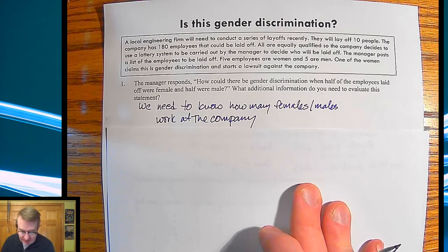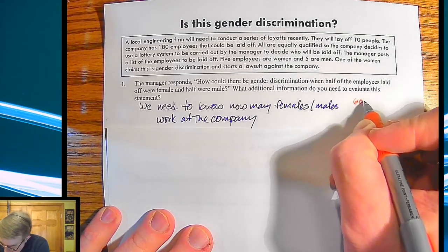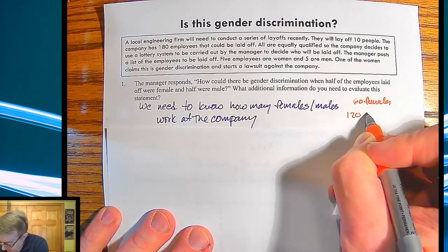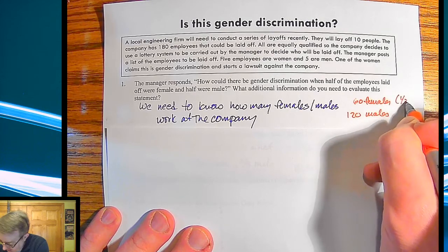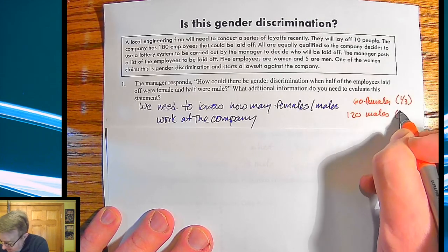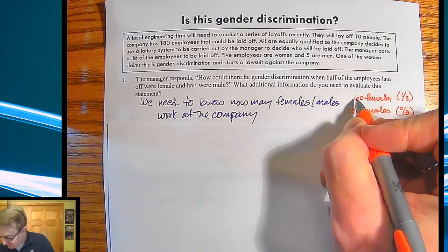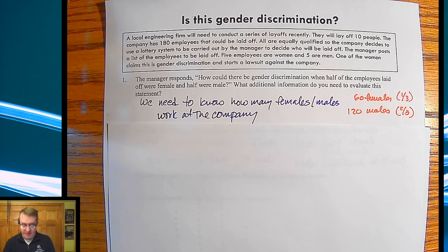We go through and we tell you this, there are 60 females and 120 males. So basically it's one third of the workforce is female. The other two thirds is male. How does that change your view? How do we prove that? Is this unlikely? Could this happen? That's what we're going to be talking about today.